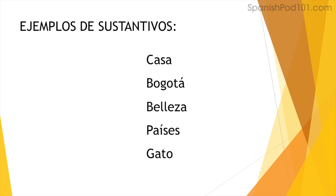The interesting thing about nouns is that they are variable — they change depending on number and gender. Not all nouns change; we definitely have exceptions, but usually nouns are words that change. For example, casa is female and singular. The classification of nouns is very extensive because there are so many of them — you can classify them as concrete or abstract, general or specific, like someone's name or a city's name. The classification is very broad because nouns are just very broad.